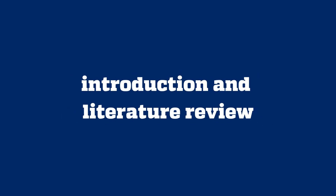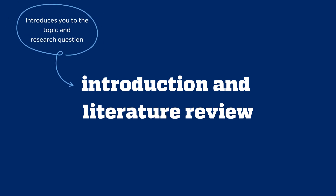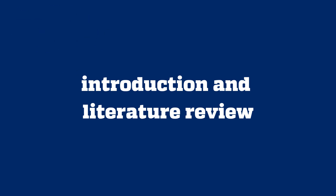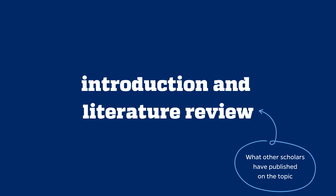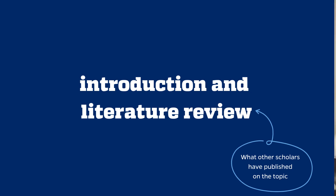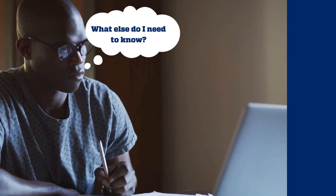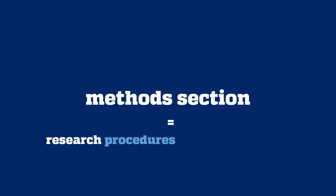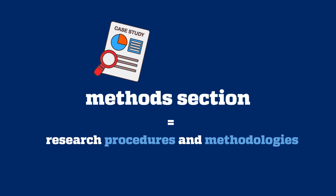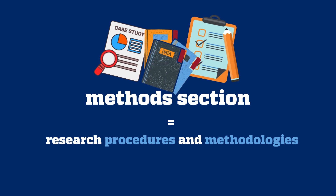After the abstract, you'll usually find an introduction and literature review. The introduction typically introduces the reader to the topic or research question the authors explored. The literature review functions a bit differently — it is usually used to describe the previous research that has been published on the topic. The literature review is a great place to go if you need background information or want to know what other scholars have written in comparison to the article you're currently reading. Next up, you'll usually find a methods section, which will outline any procedures used to carry out the research study. This could include case studies, surveys, field data collection, and more. Keep in mind that the methods used can vary widely by discipline.